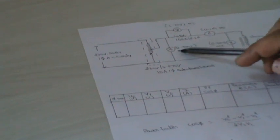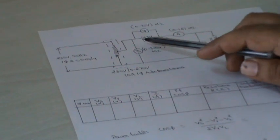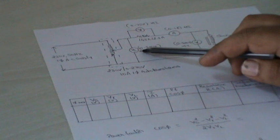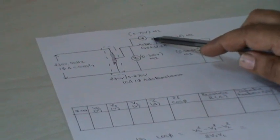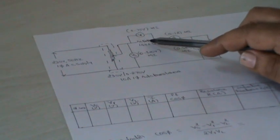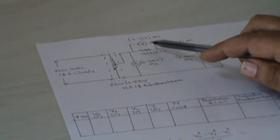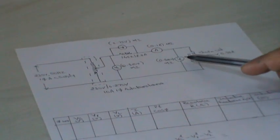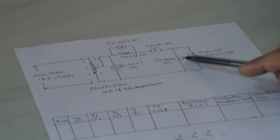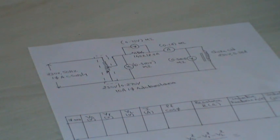Vs is to measure the supply voltage. Vr is to measure the voltage across the resistance — this resistor. Vl measures the voltage across the Choke Coil.